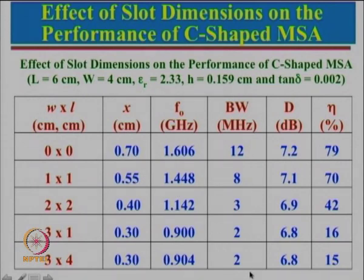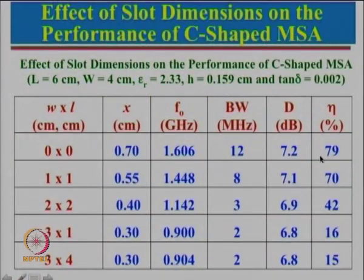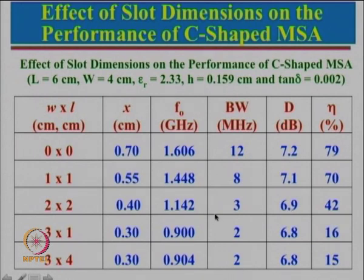Bandwidth is drastically reducing for all these configurations — even though frequency is reducing, bandwidth drops significantly. The directivity values shown are calculated for an infinite ground plane, so please do not use them for finite ground plane cases. Correspondingly, efficiency has dropped drastically from about 79% down to about 15–16%, making these relatively poor radiators with small bandwidth.